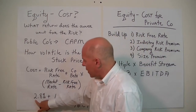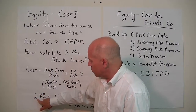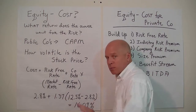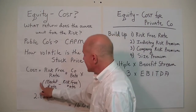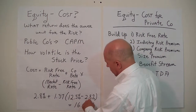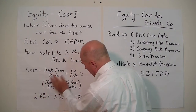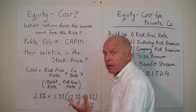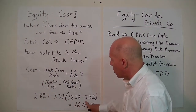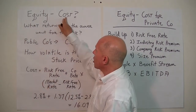For example, if the risk-free rate is 2.8%, the beta coefficient is 1.37 — meaning our stock is a little more volatile than the marketplace — and the overall market rate of return is 12.5%, then plugging these into the CAPM formula gives us a cost of equity of 16.09%. The Capital Asset Pricing Model is used for publicly traded companies to figure out the cost of equity.